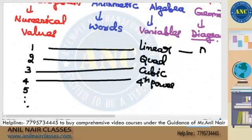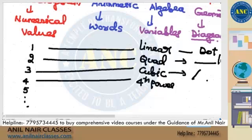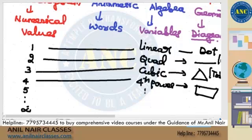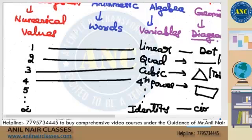In geometry, 1 is nothing but a dot. 2 is nothing but two endpoints — it is a line. Cubic, i.e. 3, is three lines together — it is nothing but a triangle. 4 is nothing but 4 points, which is nothing but a quadrilateral, and so on up to infinite, which is nothing but a circle.